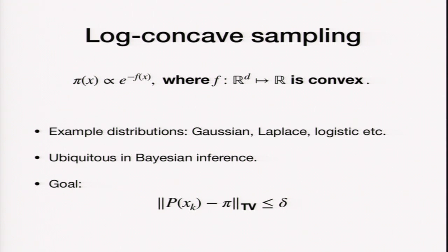Log-concave sampling has come up multiple times in this conference. The aim is to sample from a density of the form e to the minus f, where f is convex. The goal is to draw samples x_k such that the distribution of x_k is close to the true distribution pi with respect to some distance — this talk will focus on the total variation distance.